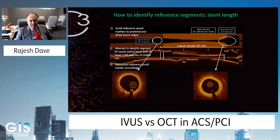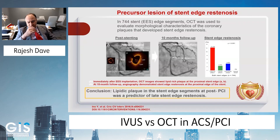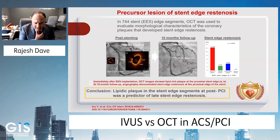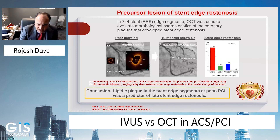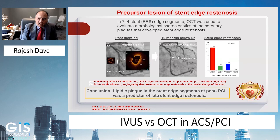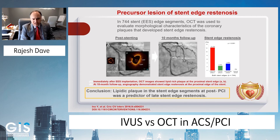The distance between the two selected areas measures 28 millimeters, making this a good case for a stent with 28 millimeter length and 3.0 or 3.5 millimeter diameter. This is data from Japanese colleagues showing that at the edge of a stent where there is a highly lipid-rich plaque, at 10-month follow-up those patients have edge restenosis. Stent edge restenosis is much higher if you have a lipid-rich plaque at the stent edge and should be avoided. In acute coronary syndrome, this is a very common scenario because there are many lipid-rich plaques in those patients, and imaging is very helpful.